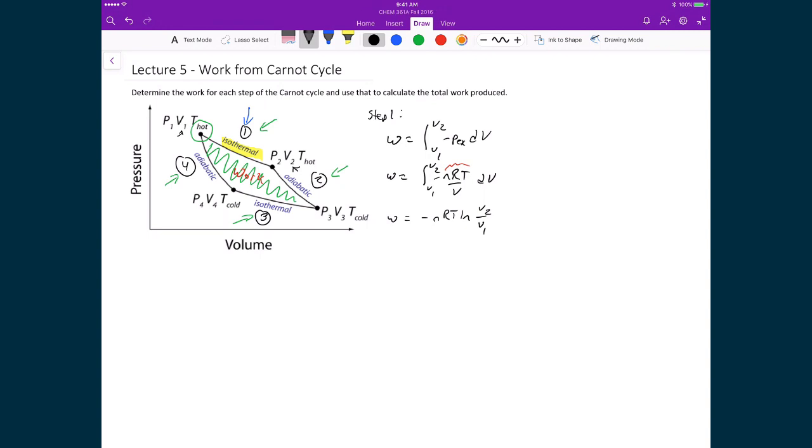So we know the answer to this is going to be minus nRT natural logarithm of v2 over v1. I also know that the T in this case is just going to be T hot, and I know that's T hot because I have an isothermal process where I have T hot and T hot here, so the temperature, like I said before, is constant. I'm just denoting it explicitly here in the expression.